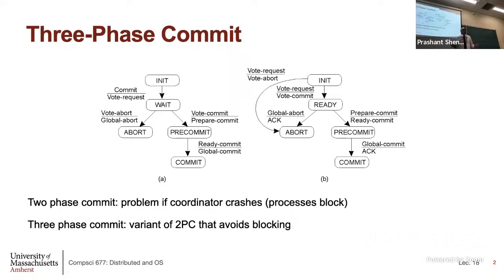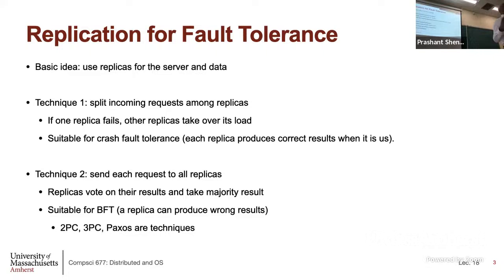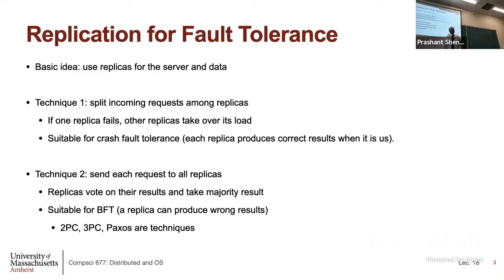Three-phase commit does not fully solve the problem. There are still other issues which we will discuss. That brings us to today's lecture: how do we get agreement where we do not have to wait for everyone to vote? It is still a voting protocol, but you just want a majority vote, not a vote from the entire group. In both two-phase and three-phase commit, everyone has to vote — if one node does not vote, you are stuck. We will relax that and say you do not need everyone to vote; let the majority decide.